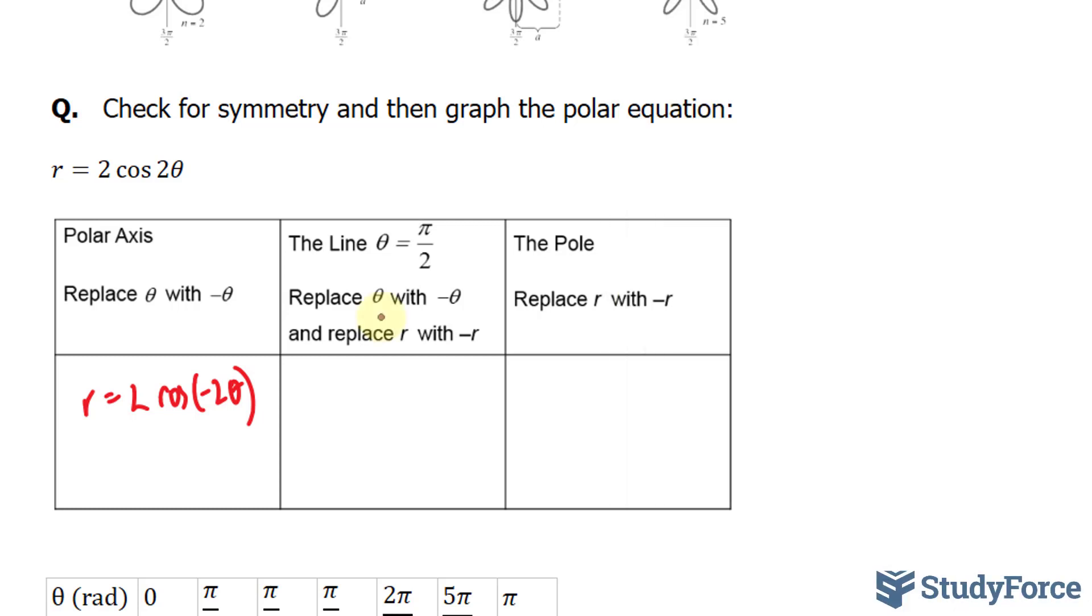Let's do a test for symmetry about theta equals pi over 2, or symmetry about the y axis if this were in rectangular coordinates. To do this test, you have to replace theta with negative theta and r with negative r.